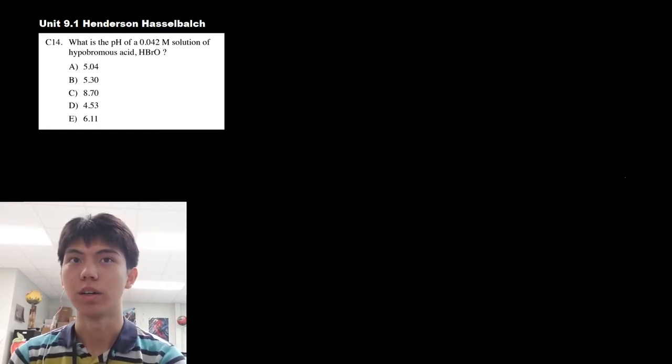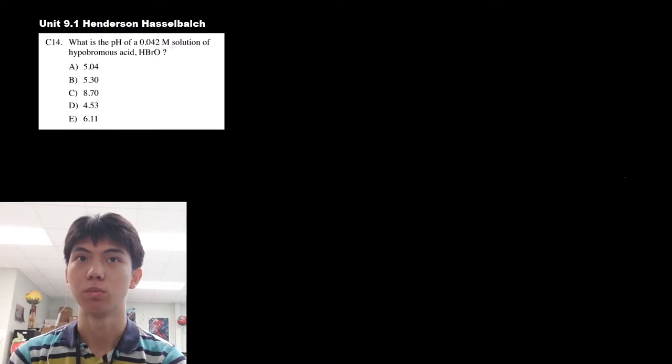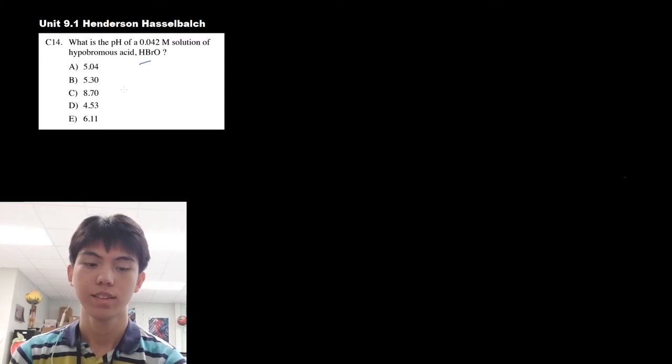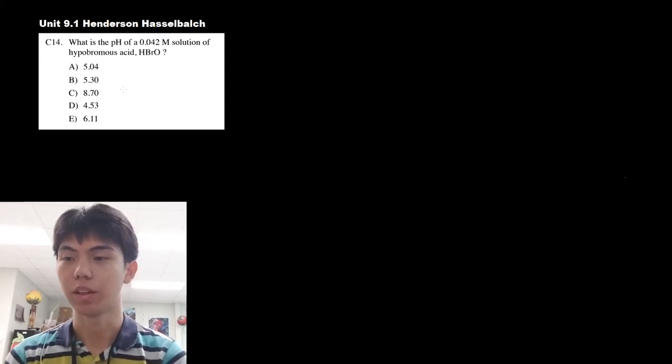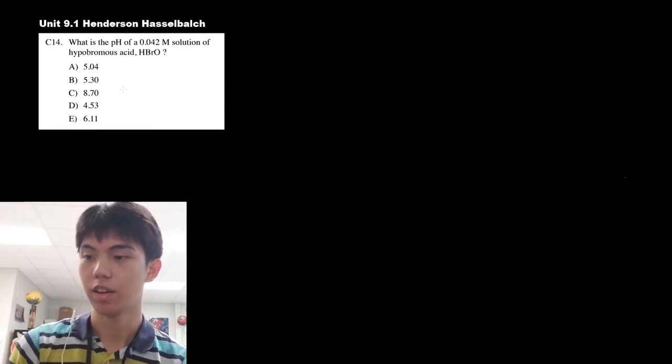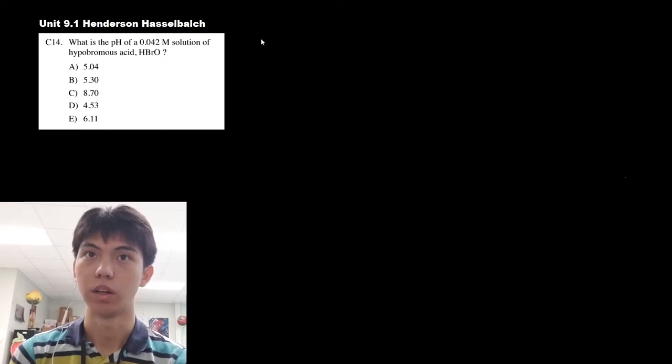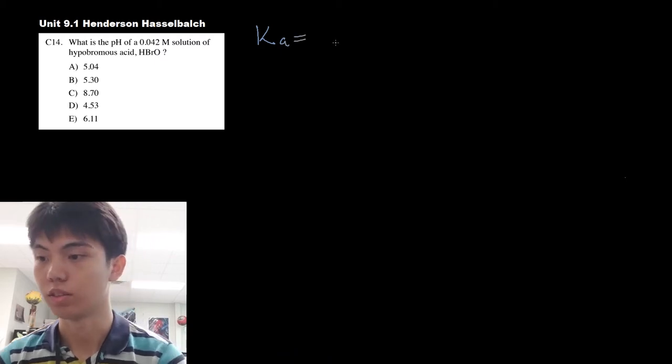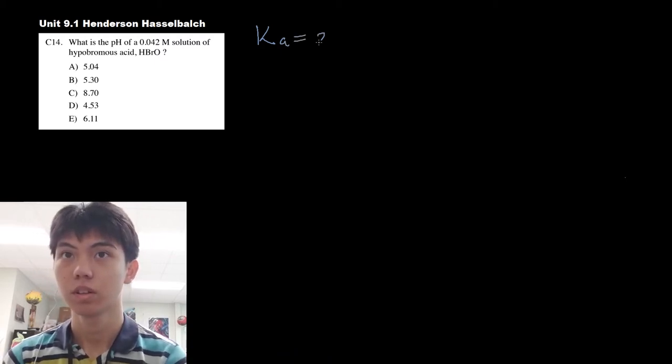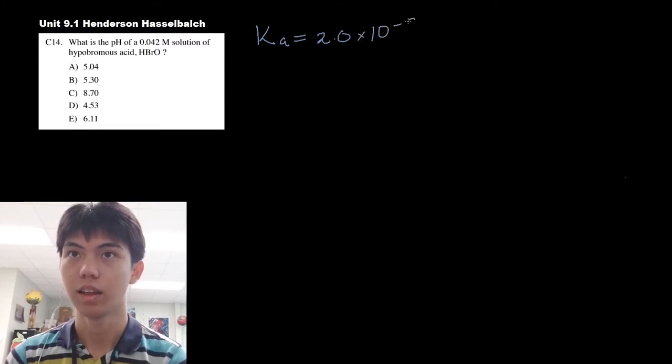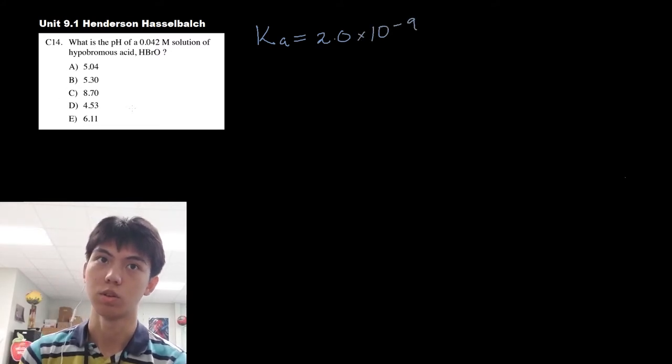What is the pH of a 0.042 molar solution of hypobromous acid? They give us the acid here. What they give us in the stat sheet is the Ka for this acid. The Ka for this acid is 2.0 times 10 to the negative 9, and this is vitally important in order to answer this problem.